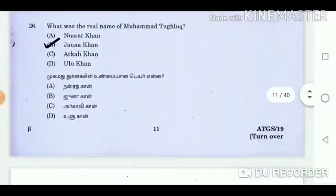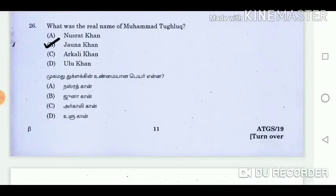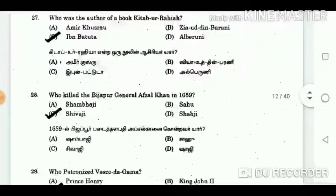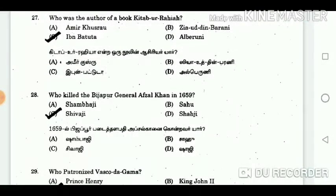Question 26: What was the real name of Muhammad Tughluq? Answer: Jauna Khan. Question 27: Who was the author of the book Kitabur Rihla? Answer: Ibn Battuta.